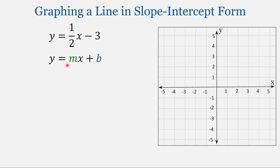Our equation is in slope-intercept form. It's called slope-intercept because just by looking at the equation, we can find both the slope and the y-intercept of the line, without doing any math in our head. And we can use that information to graph the equation — kind of like a treasure map, where we are told where to start and how to move.